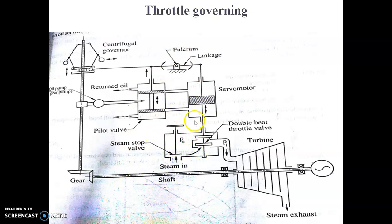The throttle governing arrangement is carried out by an oil servo meter which is controlled by the centrifugal governor. Under normal operation, the piston of the servo meter occupies a position midway between its travel, with both the inlet and exit ports of the pilot valve connected to the servo motor closed.